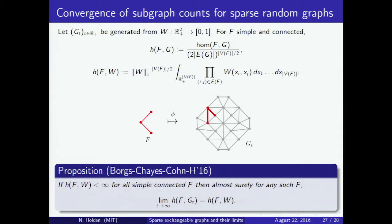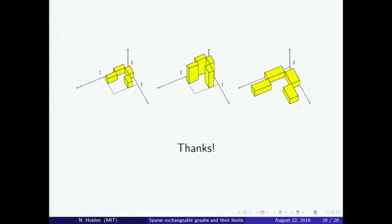For sparse graphs in general, convergence of subgraph counts is not equivalent to metric convergence. But if we look at graphs generated from a graphon, we do have convergence of subgraph counts. We let Gt be generated from a graphon over R+, and for any simple connected graph F, we look at the normalized number of graph homomorphisms from F into Gt. If Gt was generated from W, this normalized number of homomorphisms converges almost surely as t goes to infinity, under certain conditions on the graphon W.